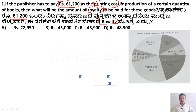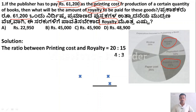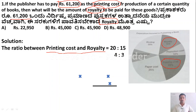The ratio between printing cost and royalty cost is 20 to 15. Dividing both by 5, this simplifies to 4 is to 3. We need to find the royalty cost. So, the ratio between printing and royalty is 4:3.